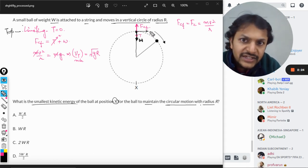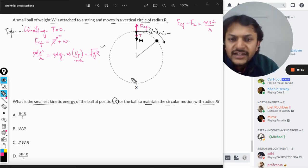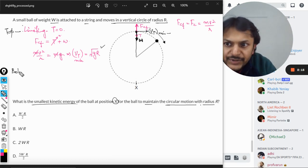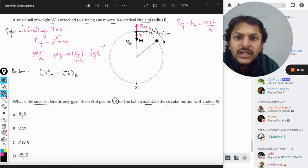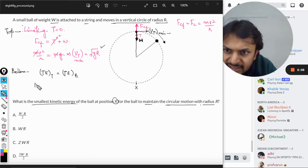Now let us go to the bottommost position. I am applying the principle of conservation of energy. The total energy at the top should be equal to total energy at bottom. Total energy at top is kinetic energy plus potential energy.